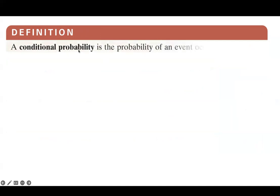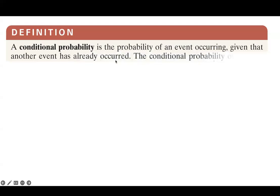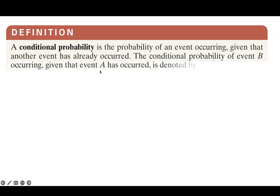In this definition, we are exploring the idea of conditional probability. A conditional probability is the probability of an event happening given that another event has already happened. The conditional probability of event B given event A is denoted by P(B|A), where the vertical line represents the conditional part, and the second event A is the event that has already happened.